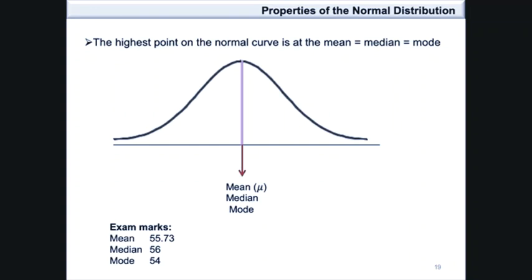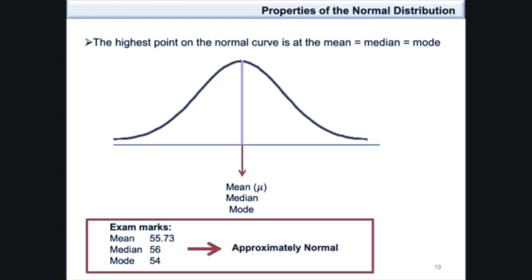For example, suppose that you have exam marks, and from these exam marks the mean is obtained as 55.73, the median is 56, and the mode is 54. That distribution of marks would be approximately normal.